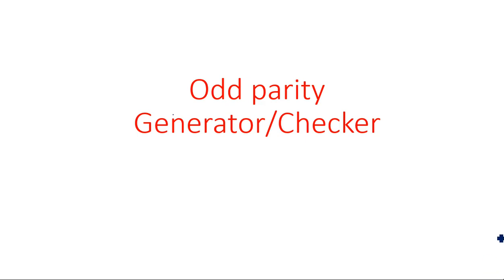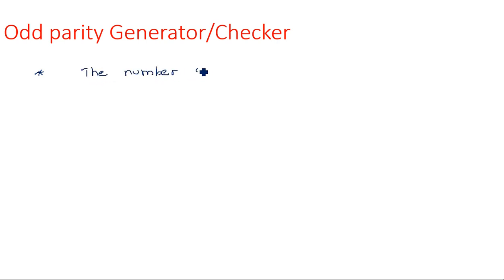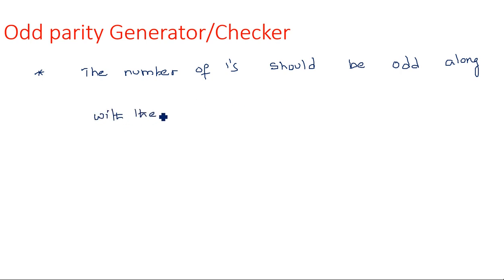In this video, I am going to explain the design of a logic circuit for an odd parity generator. As we have seen in the previous video on even parity generator, we first took the truth table based upon the logic that the total number of ones should be even including the parity bit. Here, along with the parity bit, there should be only an odd number of ones.